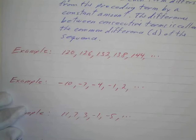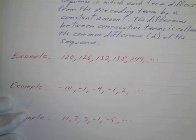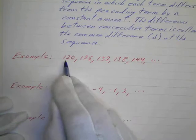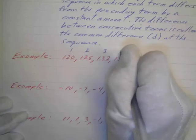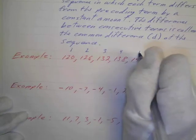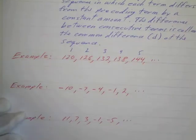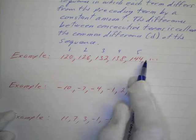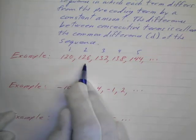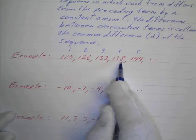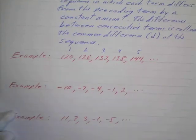Here's an example. We have a sequence here. Remember, it's a function whose domain is the set of natural numbers, so this is the range. My domain values would be 1, 2, 3, 4, 5, etc. These are the first five terms, and we can call them a sub 1, a sub 2, a sub 3, a sub 4, a sub 5, using the a sub n notation.